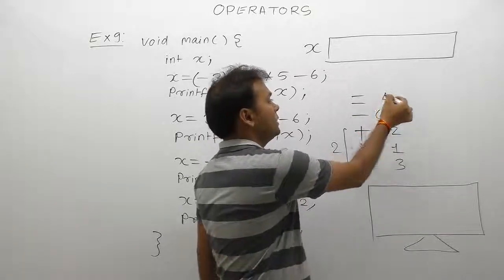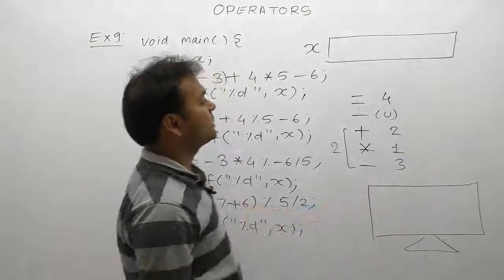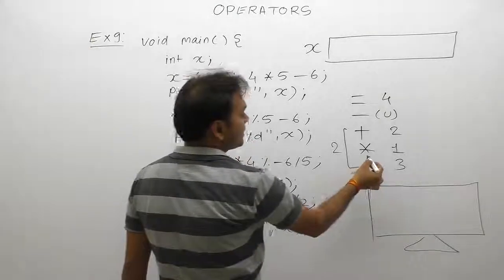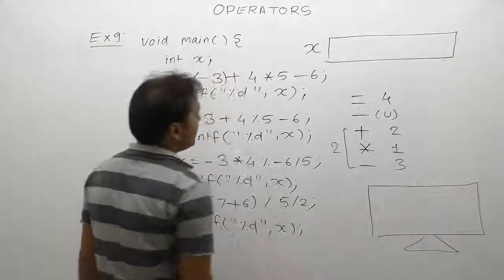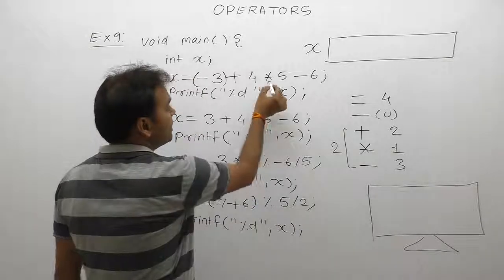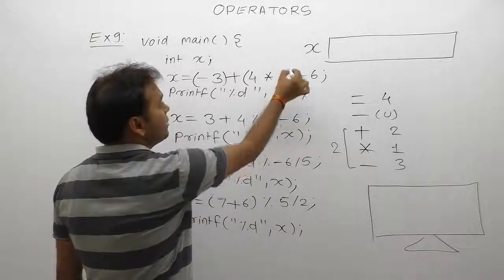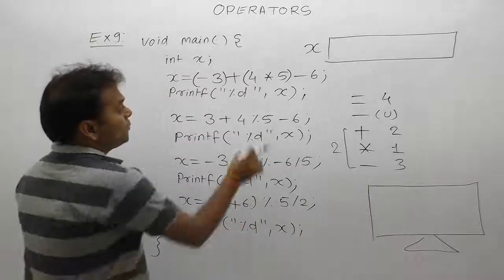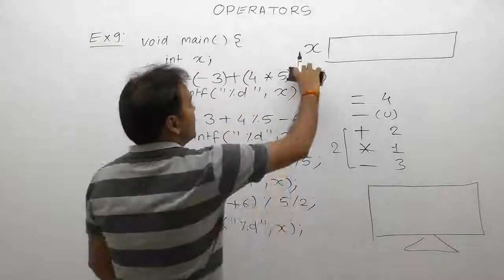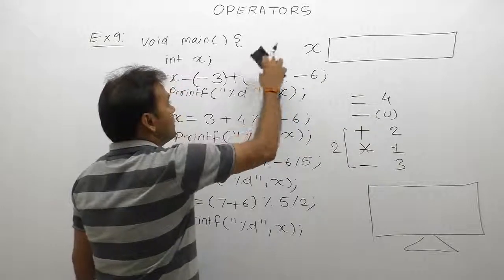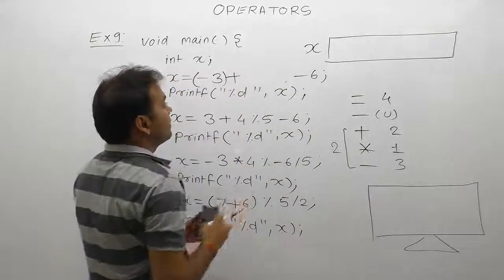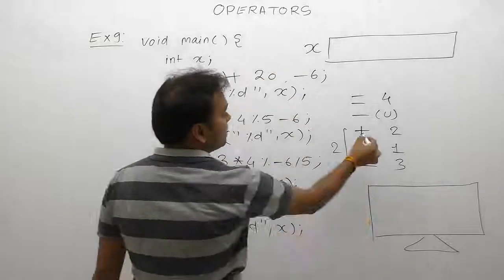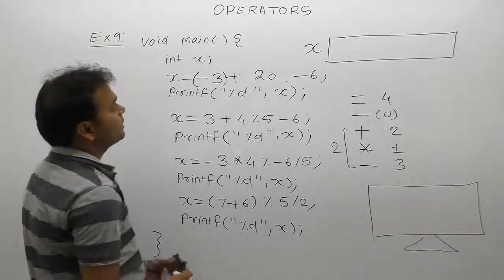For the first one, multiply first. Step number one is multiplication. First time operand is 4, second operand is 5, therefore result 4 multiply by 5 is 20. We get 20, replace with result 20. Next priority is plus. According to plus, first operand is minus 3, second operand is 20.